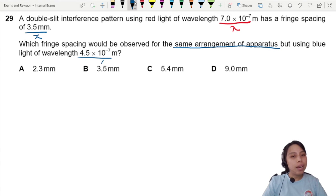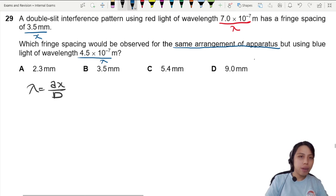There is one equation for interference: λ = ax/d. We are changing the light, so the apparatus is the same, same arrangement. That means if I look at my equation, the a and the d are constant.